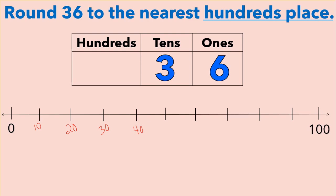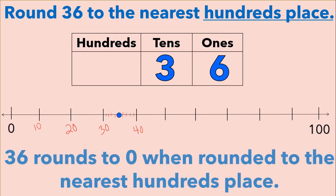I'm going to stop here because we only need to plot thirty-six. We see that thirty-six falls between thirty and forty, so it's going to be somewhere between thirty and forty. We're going to have ten equal parts in between thirty and forty, and now we can plot thirty-six on the number line. So thirty-six is closer to zero than it is to one hundred, so thirty-six rounds to zero when rounded to the nearest hundreds place.